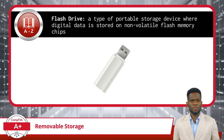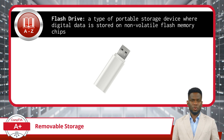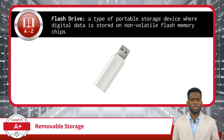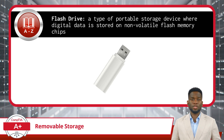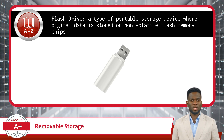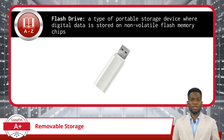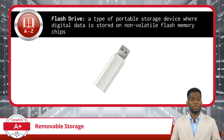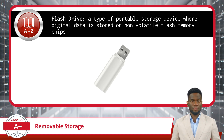One common type of removable storage is the flash drive. A flash drive is a type of portable storage device where digital data is stored on non-volatile flash memory chips. This definition may look similar to the definition of an SSD drive — it should. Flash drives and SSDs use the same flash memory chips to store data. The difference is that flash drives are small and compact, making them portable.